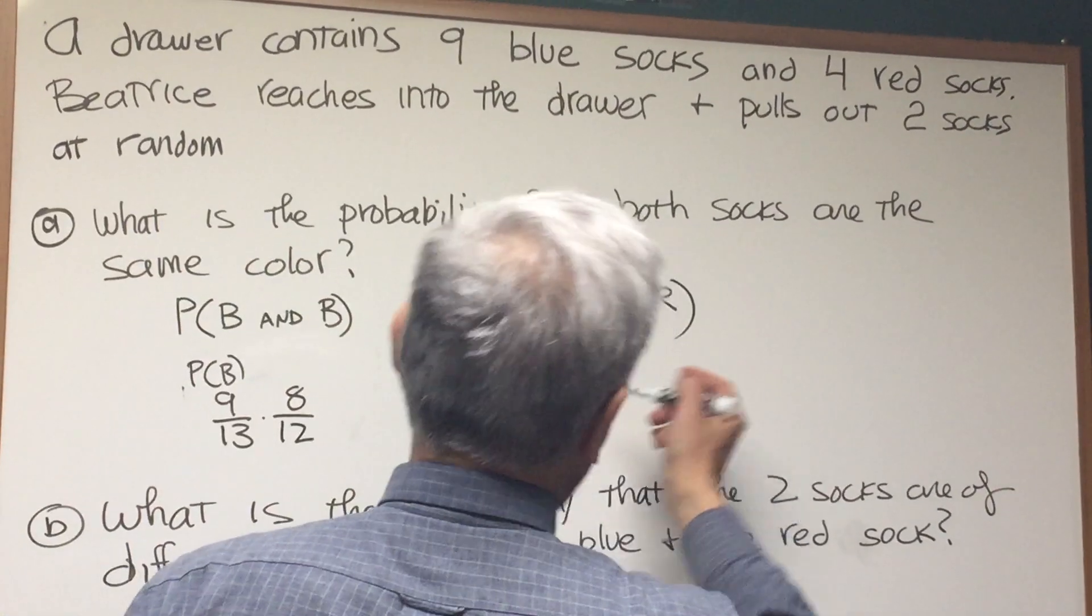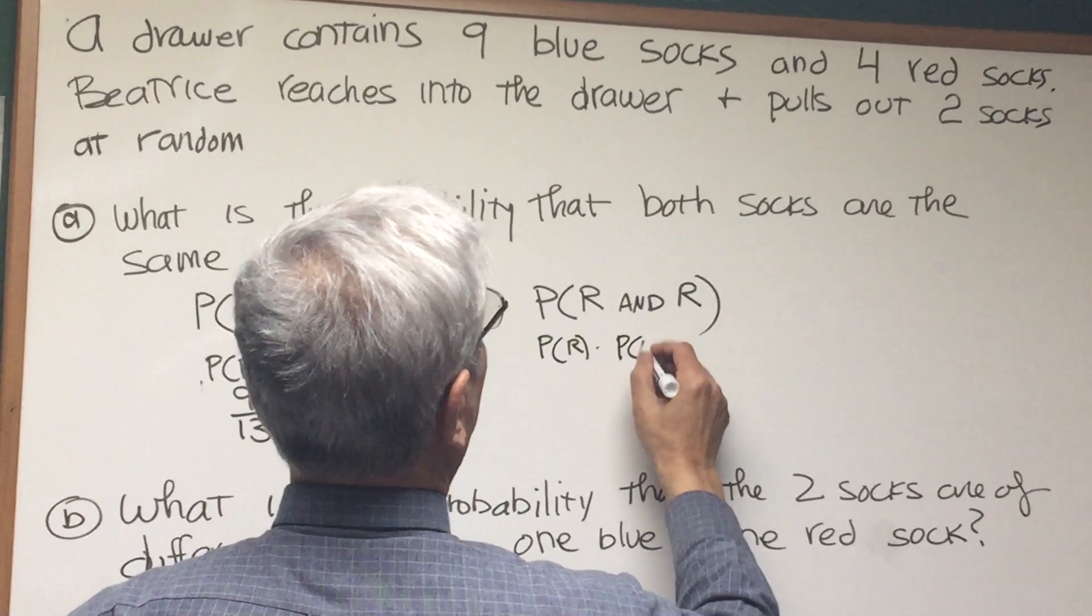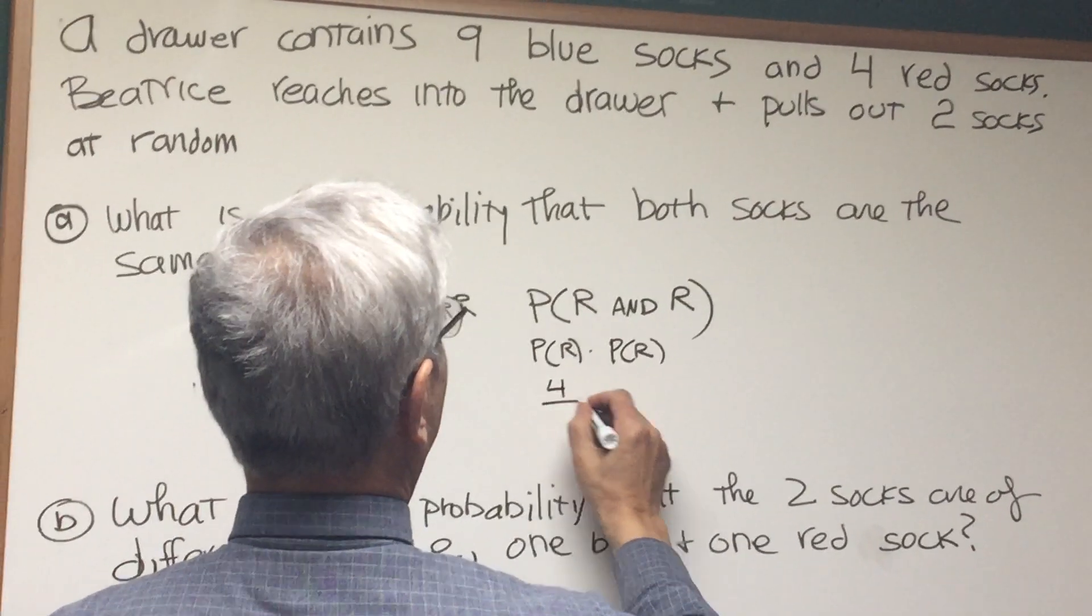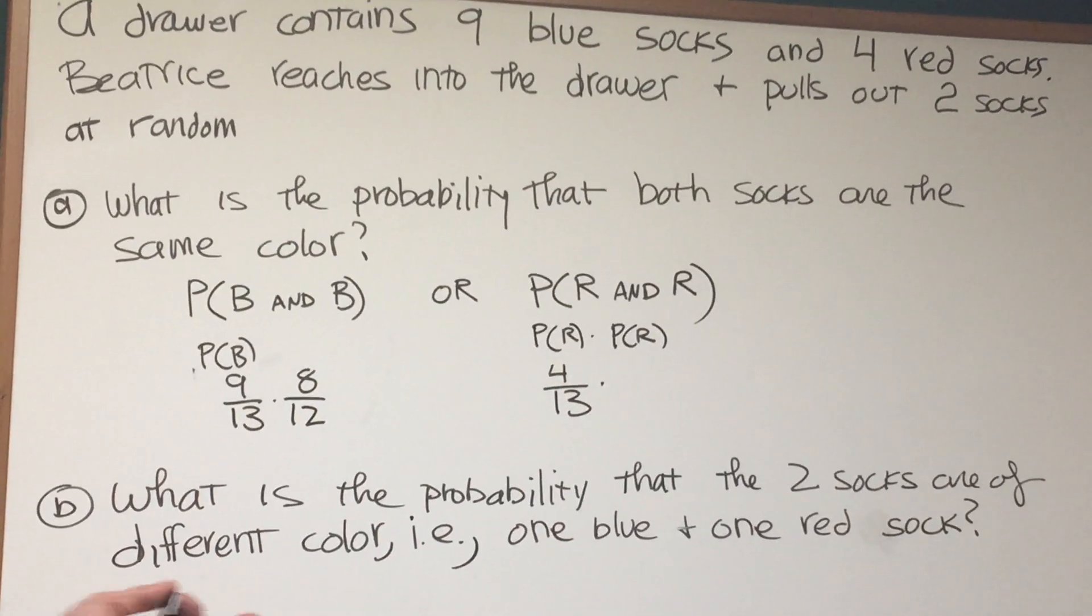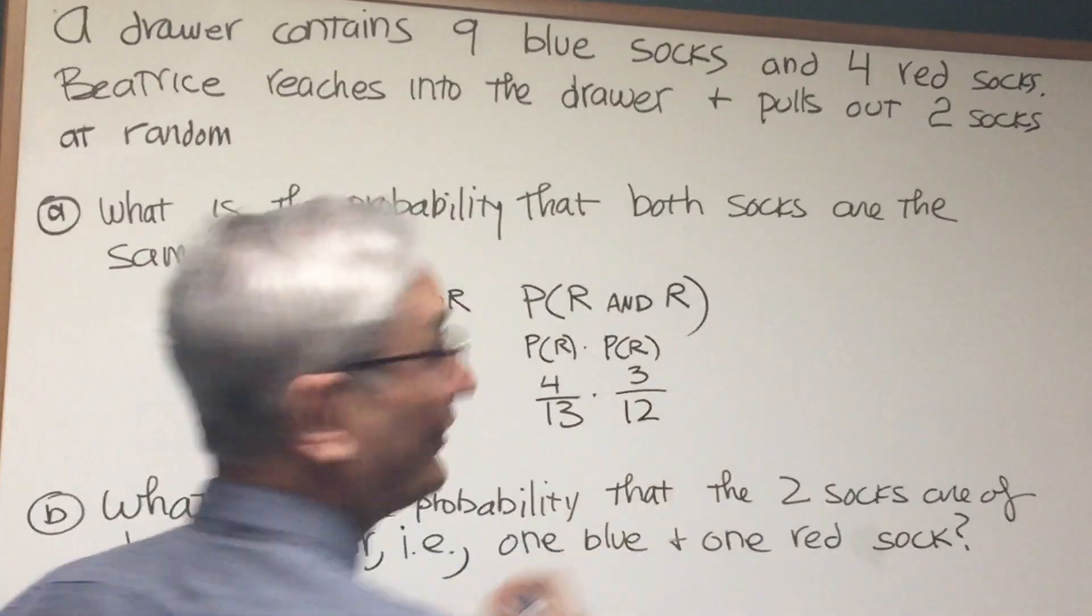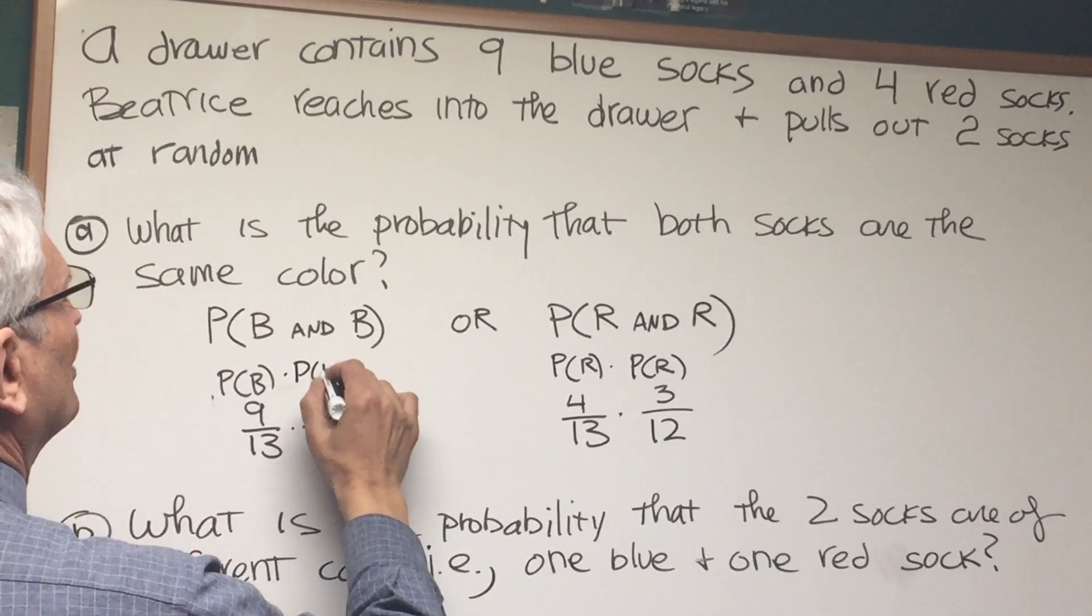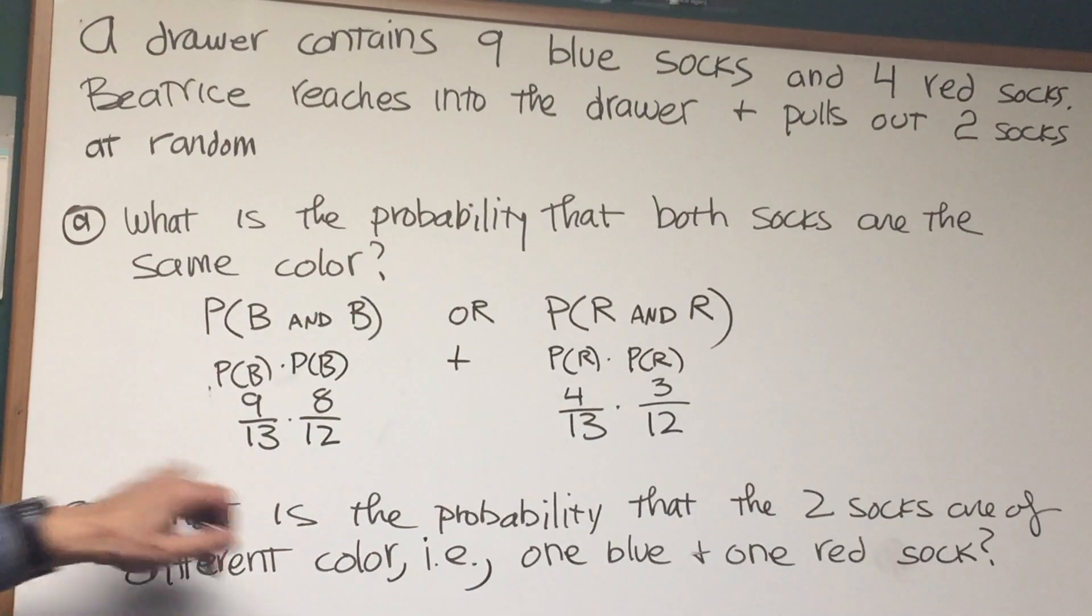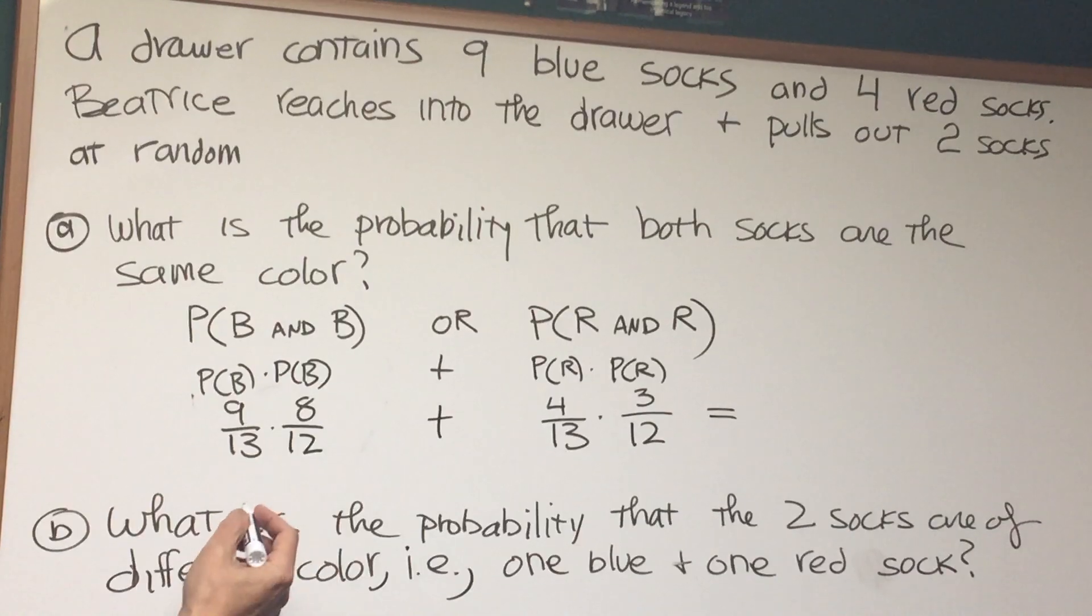Now let's go to the probability of red and red. The probability of choosing a red sock is going to be, well, there are 4 red socks over 13 out of a total of 13 socks. Once that red sock is chosen, there are only 12 socks total left in the drawer, but only 3 red socks. So we're looking for this event, the probability that there are 2 blues or the probability that there are 2 reds. Here are the numbers and we're going to add those 2 probabilities up. So let's see, this should be easy.